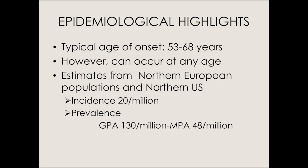Some basics of epidemiology: the typical age of onset is somewhere between the 50s and 60s, although it can extend into the 70s and 80s. It can occur at any age — there are well-described pediatric cases of almost all these diagnoses, and pediatric colleagues see GPA not uncommonly; we often inherit these cases when they become adults. The GPA form with granulomas is more common among northern Europeans and in the northern United States.